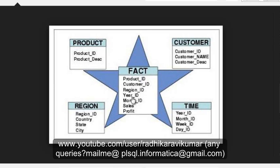Whatever is represented in number form is called a fact — that's all you need to remember. Dimension, on the other hand, gives a description for these facts. Coming to the fact table, you can see attributes like product ID, customer ID, region ID — these are just IDs like 1, 2, 3 or a number like 407. Aggregated data or a summary — such as sales, profit, or salary — these are facts.